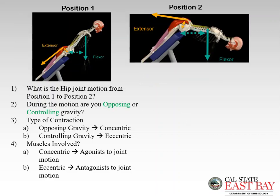Now let's look at the other side of this exercise, position one to position two. You've gone from an extended position to flexed, so your hip is flexing. During the motion, are you opposing or controlling gravity? You're lowering your body weight, so you are controlling gravity. Controlling gravity is always an eccentric contraction. For an eccentric contraction, you use the antagonist muscles to the joint motion. The joint motion is hip flexion, so the antagonists of the hip flexors are the hip extensors — gluteus maximus and hamstrings. Note that for both phases of this exercise, it uses the hip extensor muscles, gluteus maximus and hamstrings, either in a concentric or an eccentric contraction.